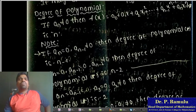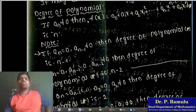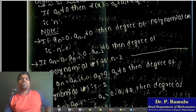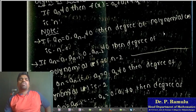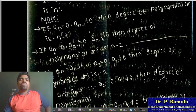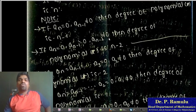What is the degree of a Polynomial? If a_n is not equal to 0 in the expression, then the degree of this polynomial is called n. Suppose if a_n equals 0, then the degree of this polynomial is called n minus 1. If a_n and a_{n-1} are both 0 but a_{n-2} is not equal to 0, then the degree of polynomial is n minus 2.